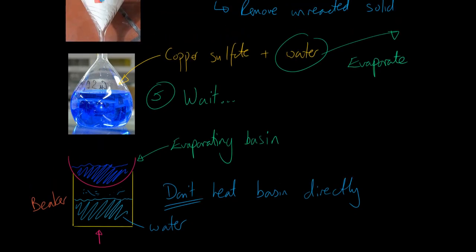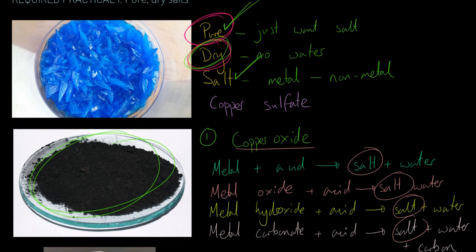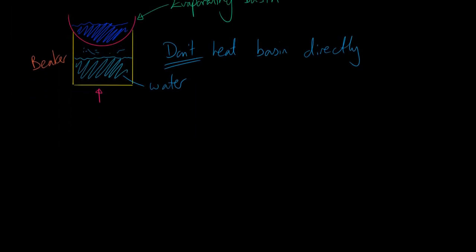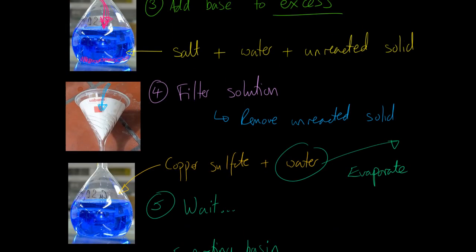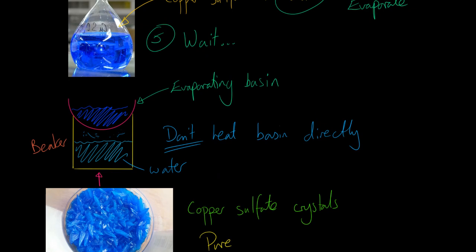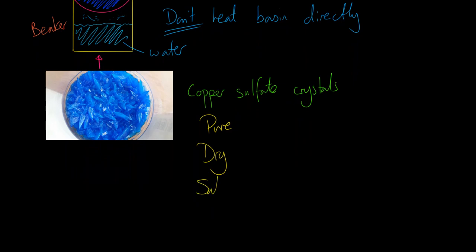So whether you are prepared to wait days and days, or whether you want to speed things along by heating it over some water, you can evaporate the water off and you can achieve objective number three: it becomes dry. Then what you have left at the end is you have some copper sulfate crystals, which are pure - because earlier on we filtered them and got rid of the unreacted solid - they are dry because we evaporated off the water, either by waiting a massive amount of time or by speeding things along with some steam and some hot water in a beaker - and it is a salt because you have your metal and your non-metal. Thanks very much.